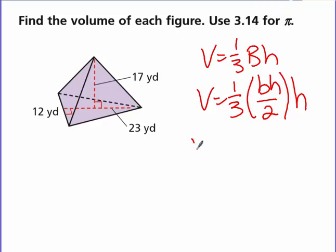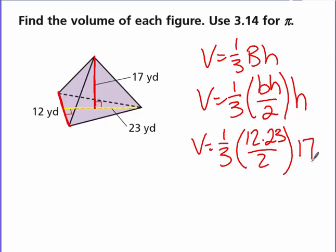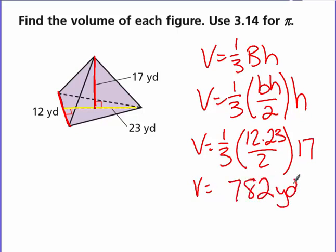So what is the base and height of that triangle? Volume is equal to one-third. The base of that triangle is 12, and the height of that triangle is 23, so I divide that by 2 to get the triangle area. Then I multiply by the overall height of the figure, which is 17. In the calculator: 12 times 23 equals, divide by 2, then times 17, then divide by 3 — and you end up with 782 yards cubed.